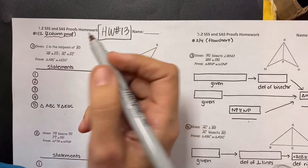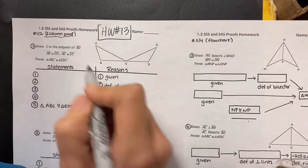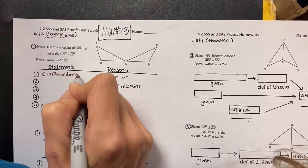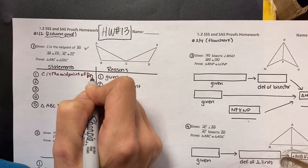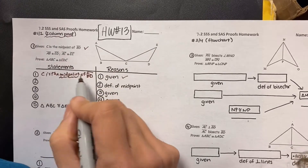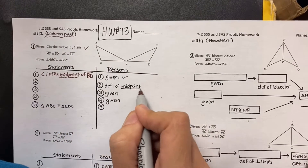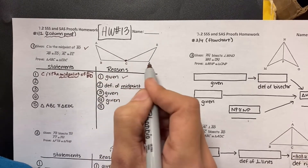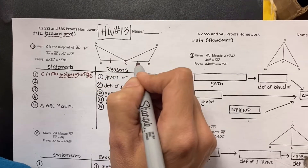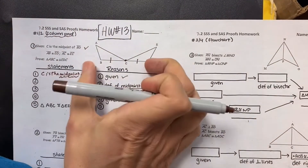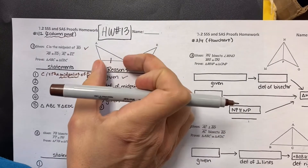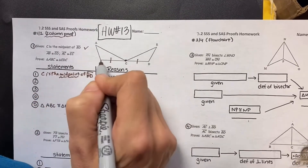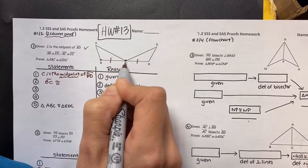First, given within the instructions: C is the midpoint of BD. So we write that out. That's a very important vocab word. If they give a special vocab word, usually the next step is we have to define what that means. So if C is really in the middle of line segment BD, then the left side has to equal the right side — like if the whole thing is 10 and C is in the middle, that means 5 and 5. So the definition of midpoint tells us that segment BC is congruent to CD.